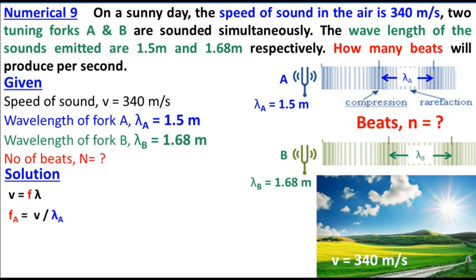So, F of A is equal to V divided by lambda A. V is 340 divided by lambda A which is 1.5. So this is the frequency of A, 226.66 hertz.